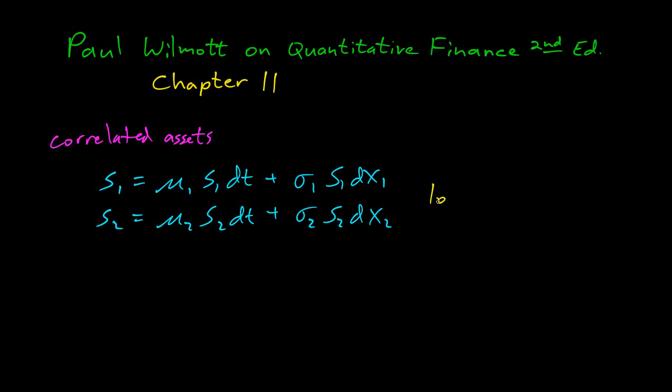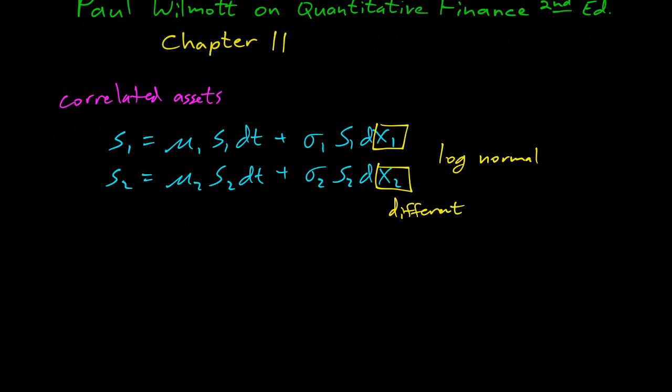So these are both log normal. And one thing to notice is we have X1 and X2, and these are different. So these are different sources of randomness, and each one has its own mu and sigma drift and volatility, and they have different sources of randomness, so they're not perfectly correlated. And so we have the usual expectation of DX1 is 0, expectation of DX squared is DT, and then we have the expectation of DX1, DX2, it's not just DT, it's rho DT. And so this is the correlation coefficient here. So that tells how much these two different sources of randomness are correlated.